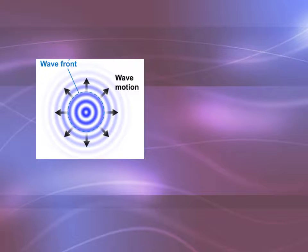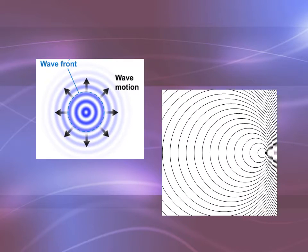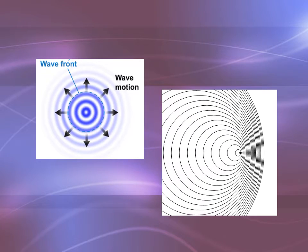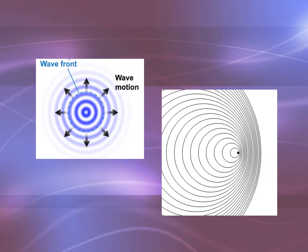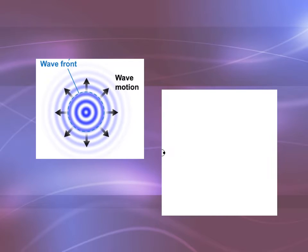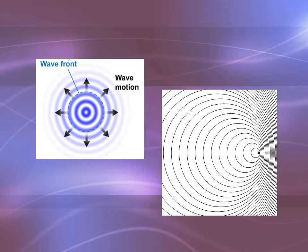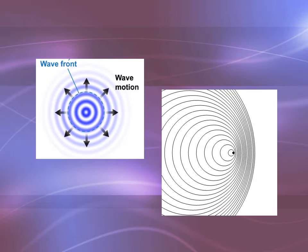But that's all well and good until what happens if there's movement? So here you have a source of the wave moving from left to right. And if you could freeze it in time, you would see that each of those expanding circles is expanding at the same rate, but they look really squished together on the right and really spread out on the left.